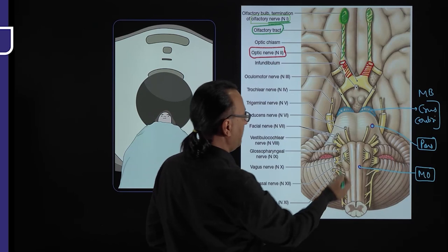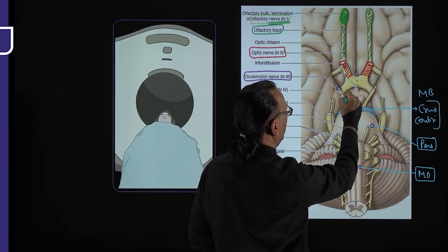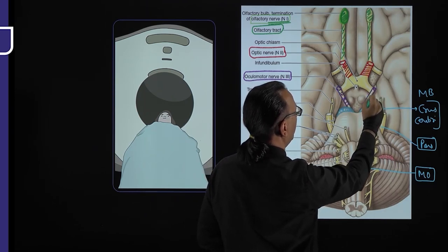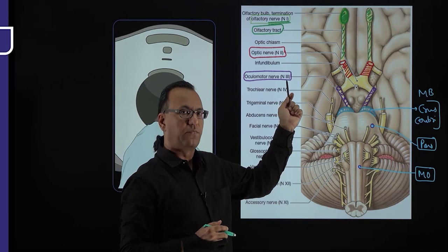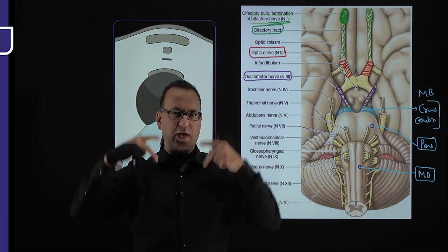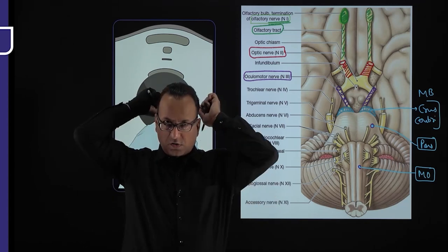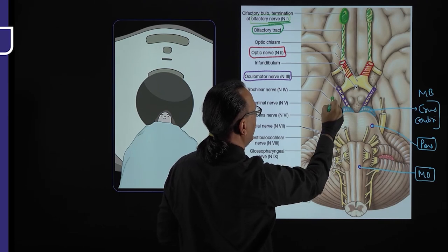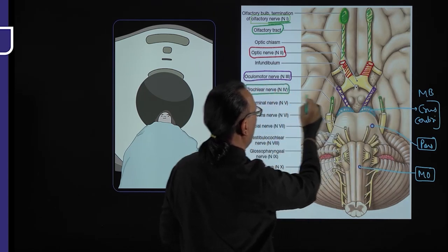Cranial nerve 3, the oculomotor nerve, comes from the midbrain arising at the level of the superior colliculus and can be seen on both sides. The trochlear nerve, cranial nerve 4, also comes from the midbrain at the level of the inferior colliculus. All cranial nerves exit ventrally except the trochlear nerve, which exits dorsally before coming ventral. It is the thinnest cranial nerve, having very few axons.